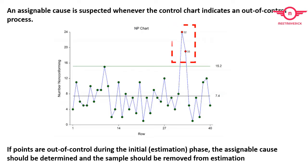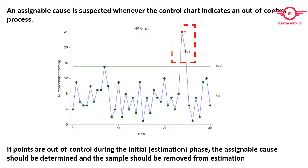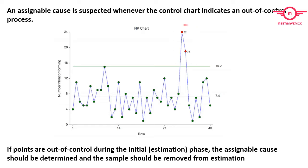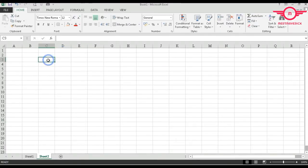The sample should be removed from estimation. Now, what is the difference between a p chart and an NP chart? The NP chart is very similar to the p chart. Rather than focusing on the proportion of non-conforming units as the p chart does, the NP chart focuses on the average number of non-conforming units.